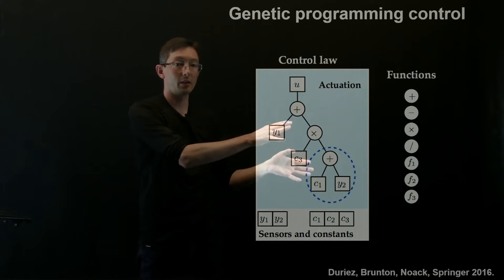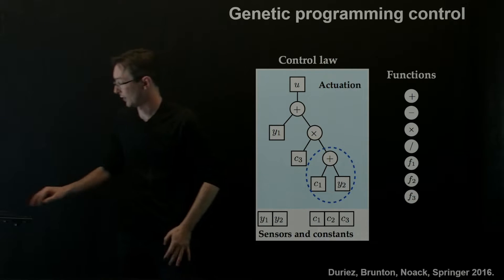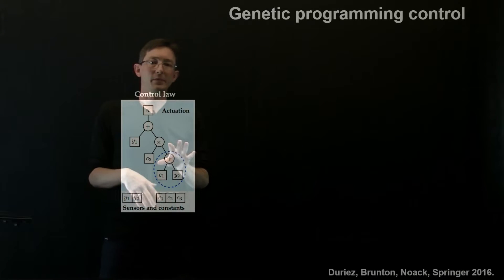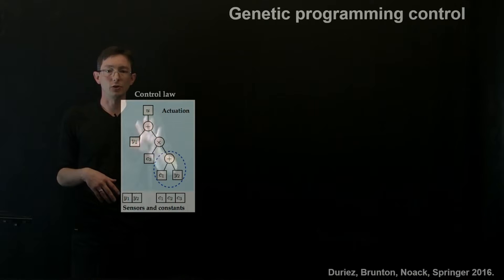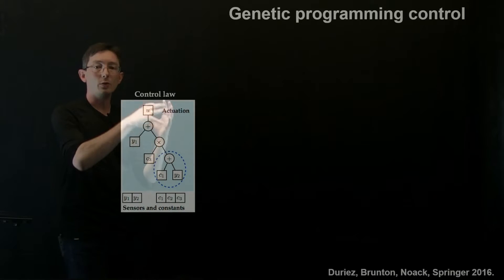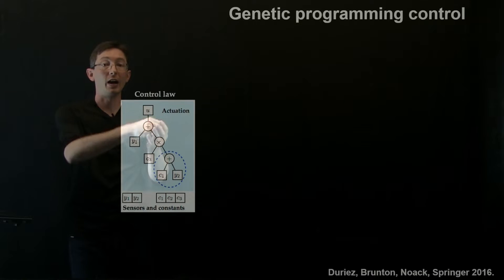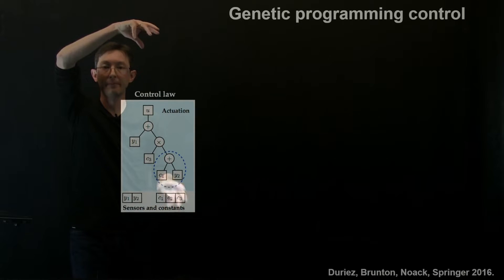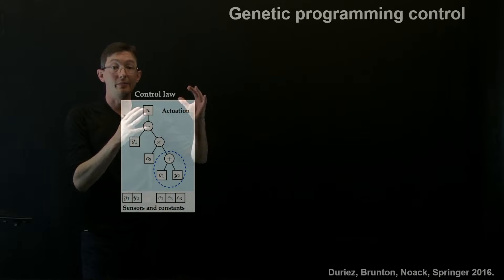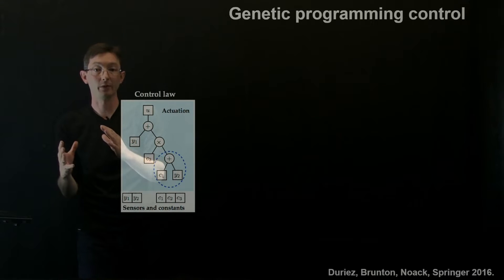We're going to be focusing our effort on genetic programming for control. So that's the basic idea. You have a control law. And you evaluate each of those control laws. So I might start with an initial generation of 100 of these things randomly generated. I run them all in my experiment and I see which one gives me good performance, which one gives me bad performance.